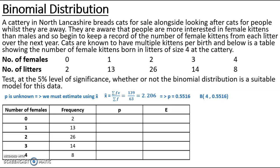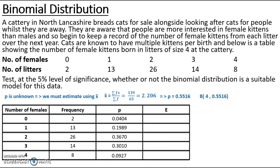I input that information into my calculator to get the probabilities of getting 0, 1, 2, 3, and 4 females. Out of those 63 litters — obtained by adding 2, 13, 26, 14, and 8 — the expected counts are: the probability of 0 females is 0.0404, so 0.0404 × 63 gives just over 2.5 litters expected with no females; just over 12.5 litters expected with 1 female; just over 23 with 2 females; just under 19 with 3 females; and just under 6 with 4 females.